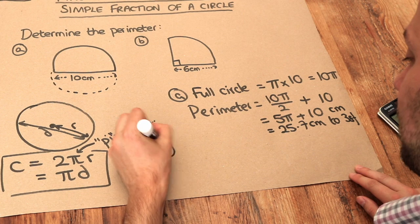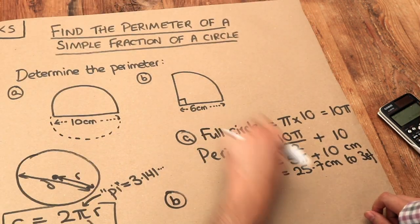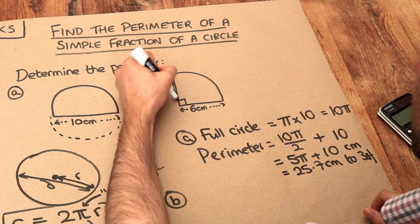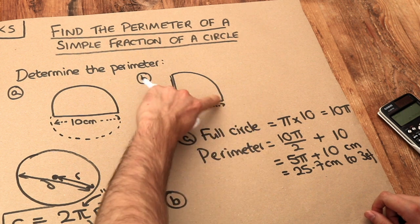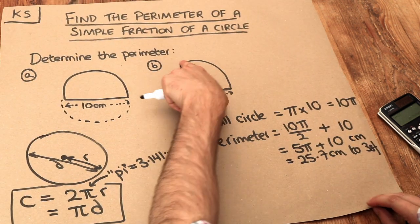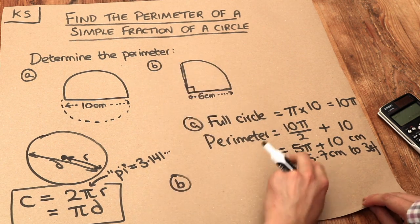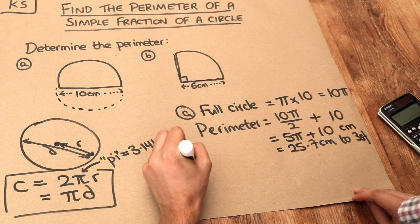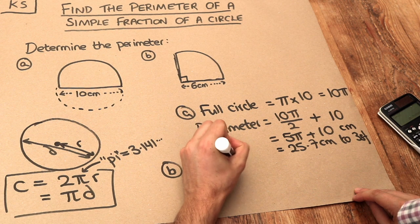What about the second one? Well, this time we've got three lengths. We've got this length here. We've got this length here. And we've got the curvy length as well. Let's start with the hardest bit, the curvy length. Notice this is a quarter of a full circle. So let's work out the circumference of a full circle first.